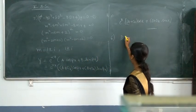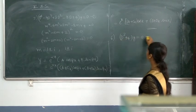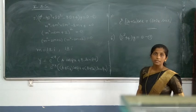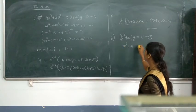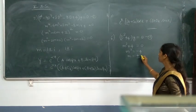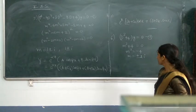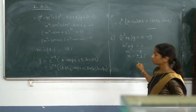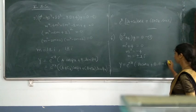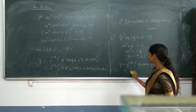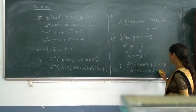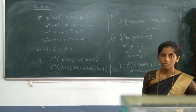Problem 6: Solve (D² + 4)y = 0. The auxiliary equation is m² + 4 = 0, giving m² = -4, so m = ±2i. These are complex roots with α = 0 and β = 2. Since e^(0·x) = 1, the complementary function is y = A·cos(2x) + B·sin(2x).